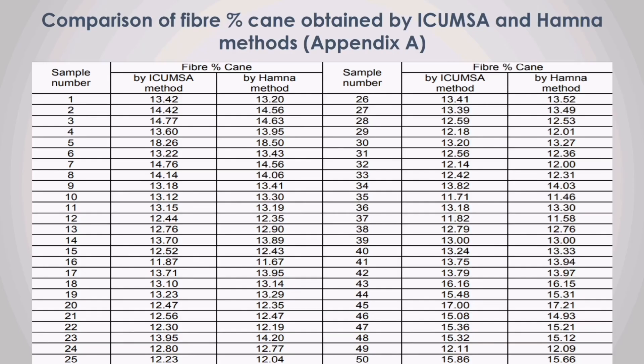Comparison of fiber percent cane obtained by ICUMSA and Hamner methods. 50 samples of various cane varieties were analyzed by both methods and the results are shown in the table. We can see that the values from both methods are comparable.